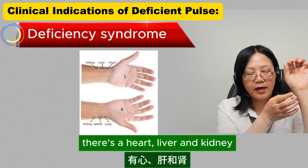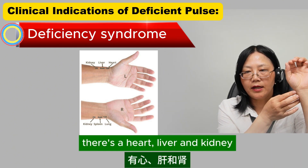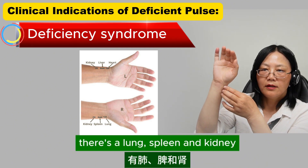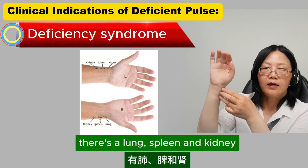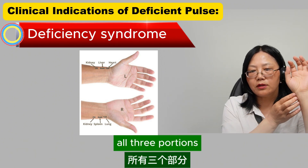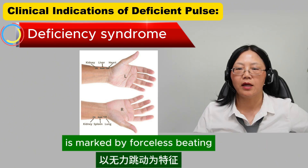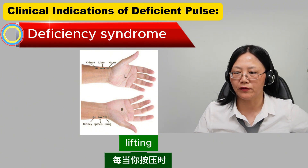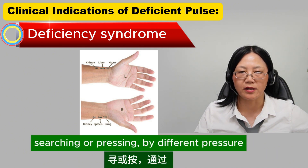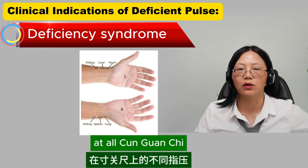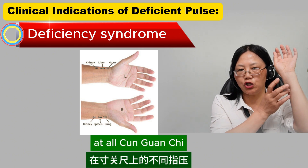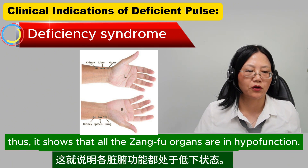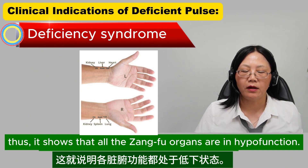Each portion is associated with different organs. On your left hand, there's heart, liver, and kidney. On your right hand, there's lung, spleen, and kidney. When all three portions feel deficient — forceless beating whenever you apply pressure, whether lifting, searching, or pressing at all the cun guan chi — it shows that all the zangfu organs are in hypo function.